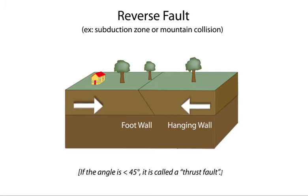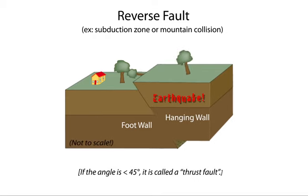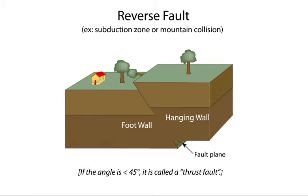In a reverse fault, the hanging wall moves up relative to the foot wall. This motion is caused by compressional forces and results in overall shortening.